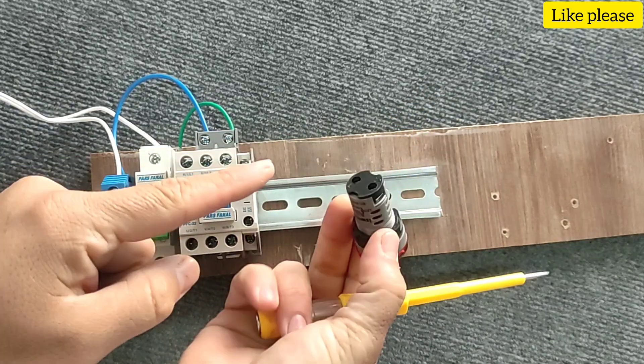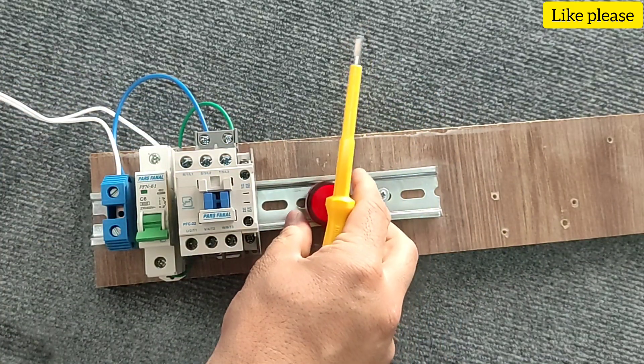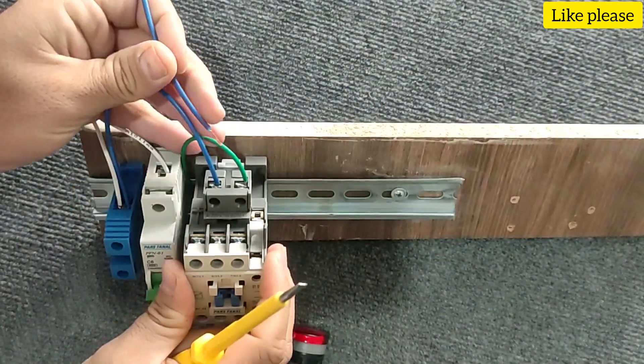The indicator light also needs a null wire, which we connect.